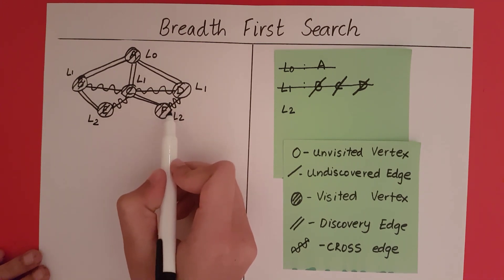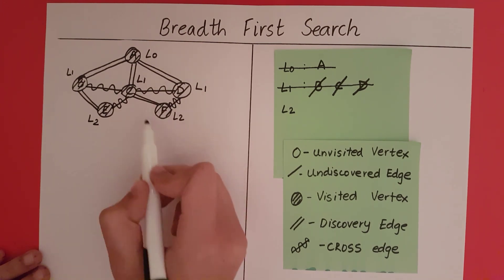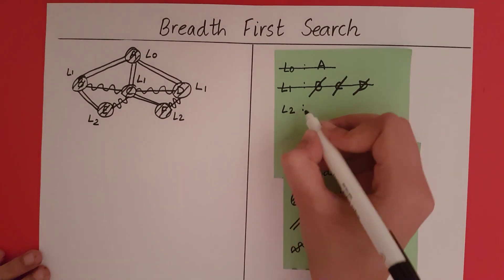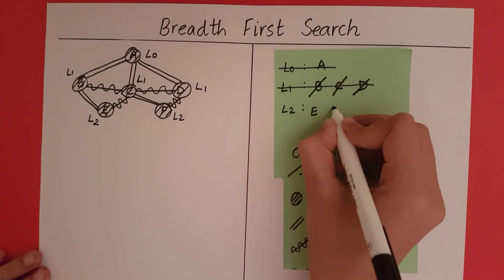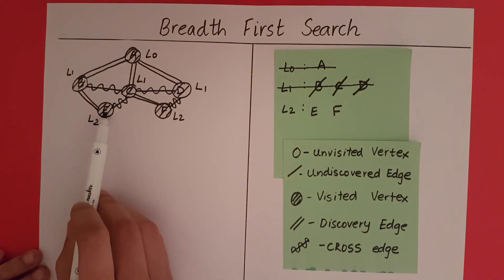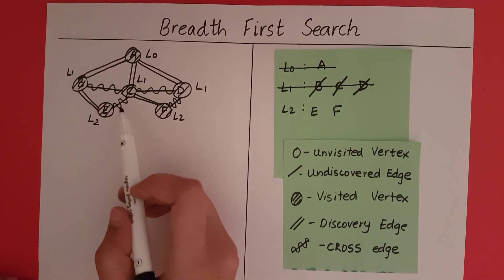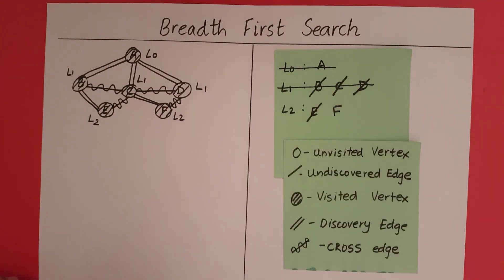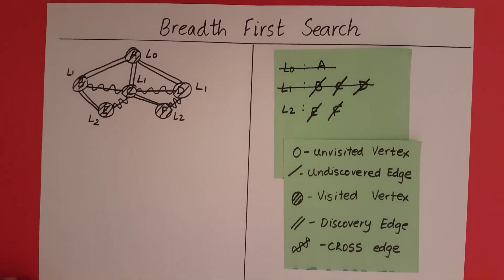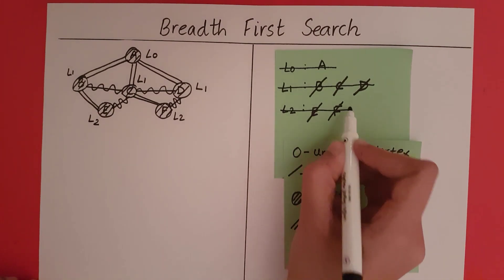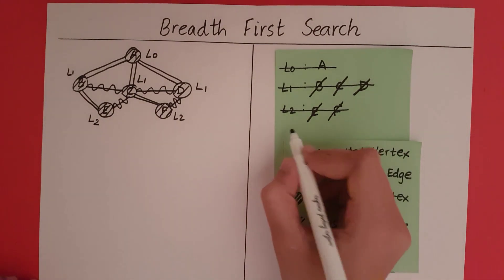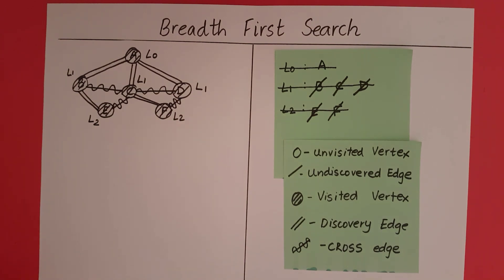Since C discovered F and the level after C is level 2, F is also in level 2. So the vertices in level 2 are E and F. We go to E — there are no undiscovered edges incident on E, so E is over. We go to F — there are no undiscovered edges incident on F, so F is over. Level 2 completes. We check level 3 — there are no vertices in level 3, so we stop.